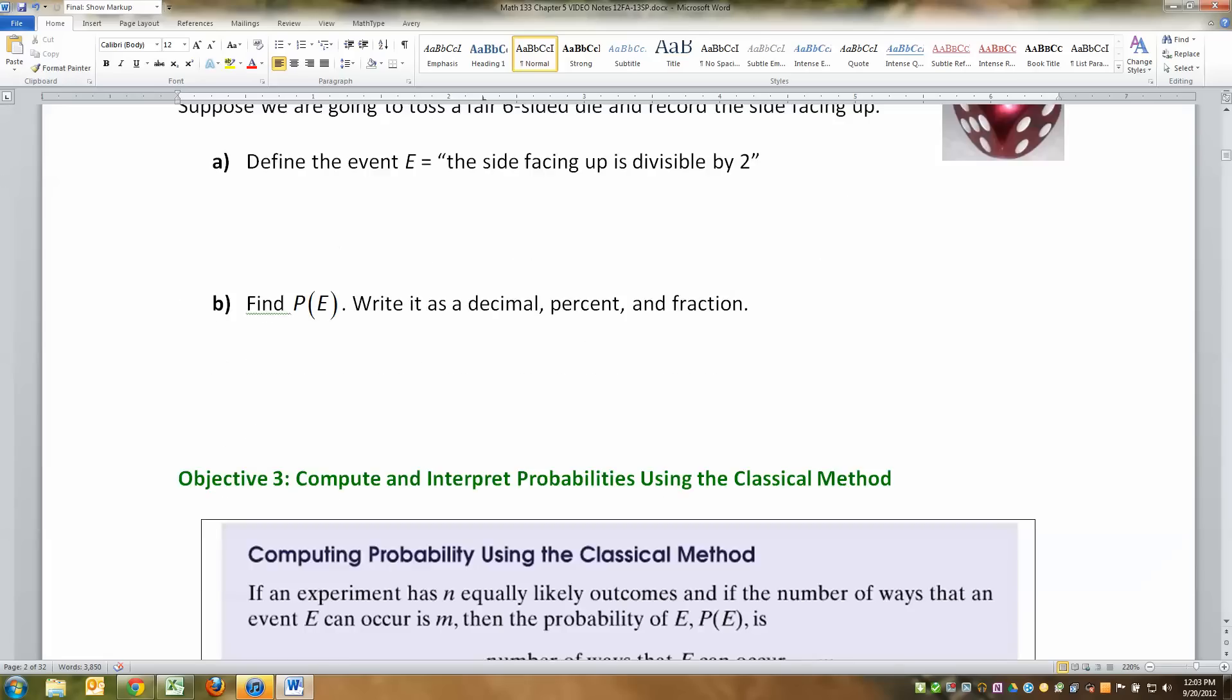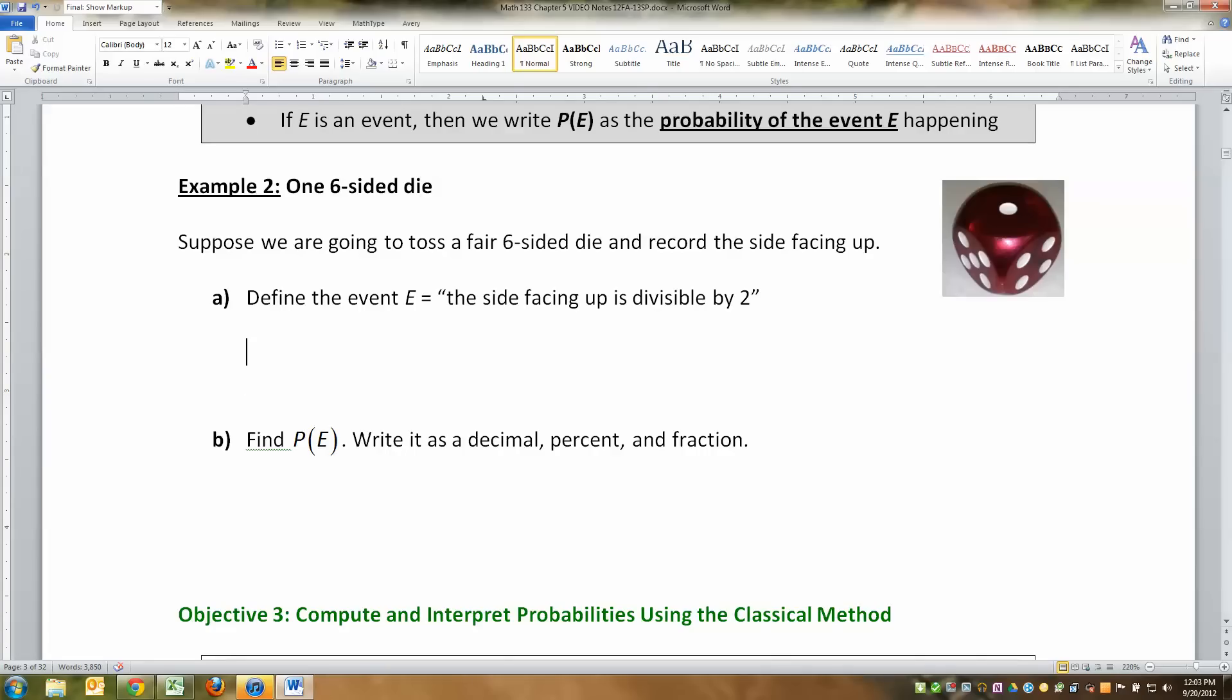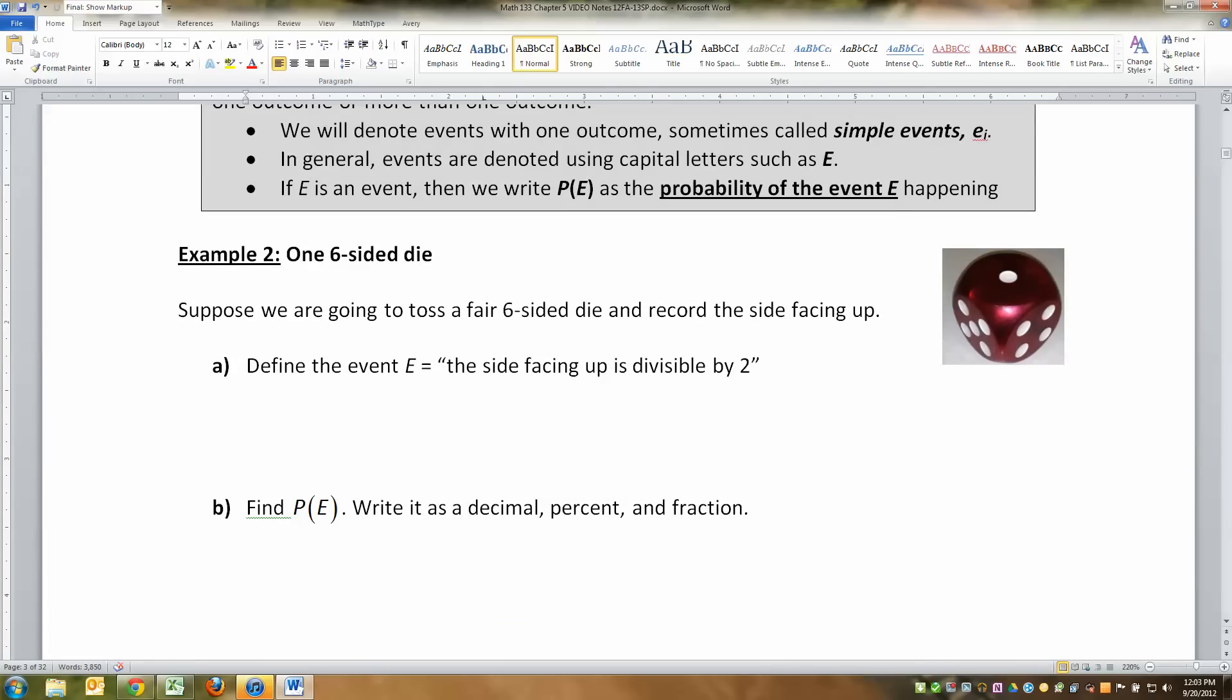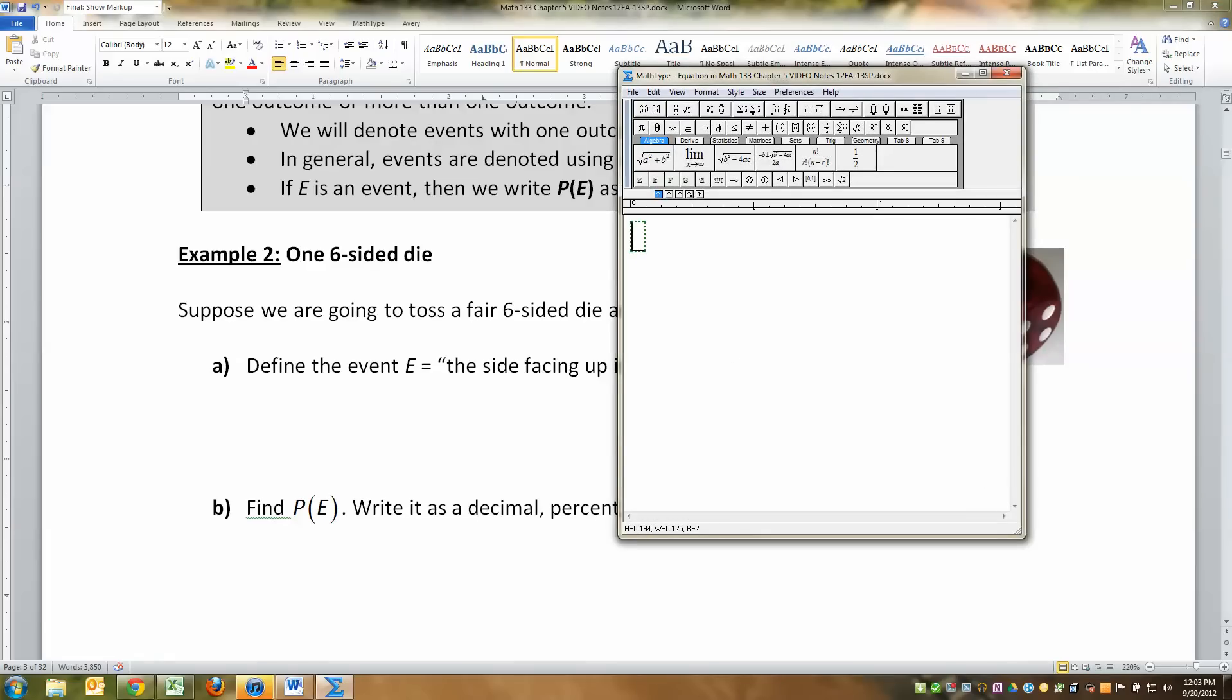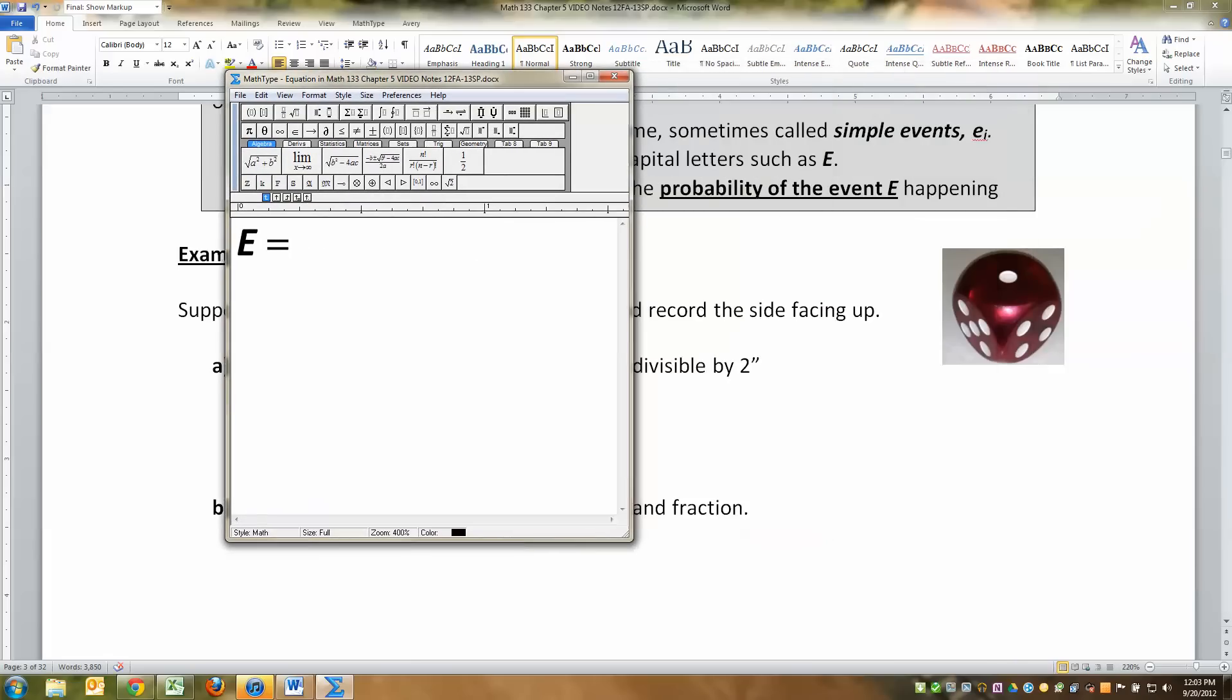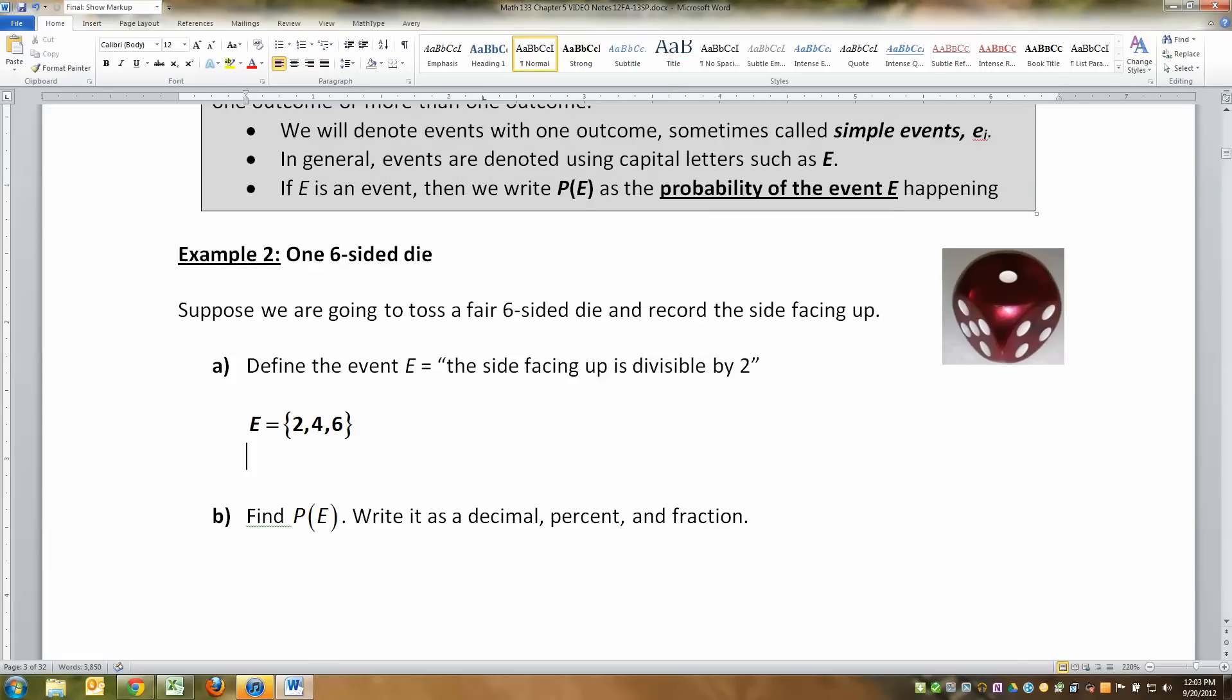Define the event: the side facing up is divisible by two. Divisible by two is a fancy way of saying even. So that event E is equal to, well, let's think. On a six-sided die, what sides are divisible by two? So it's 2, 4, and 6. The even numbers. It's a fancy way of saying even. So there's event E.